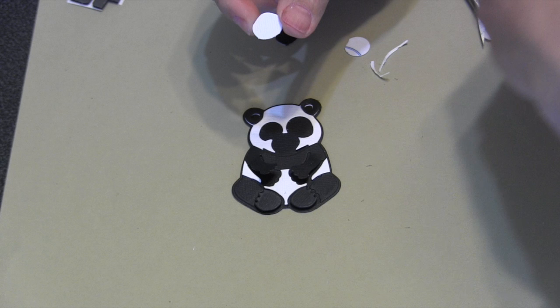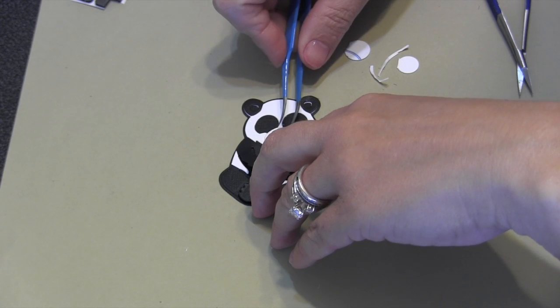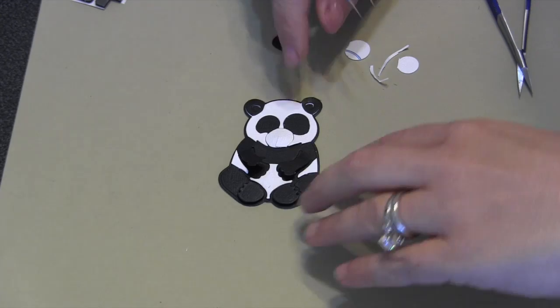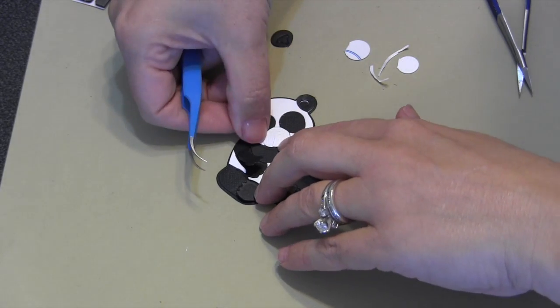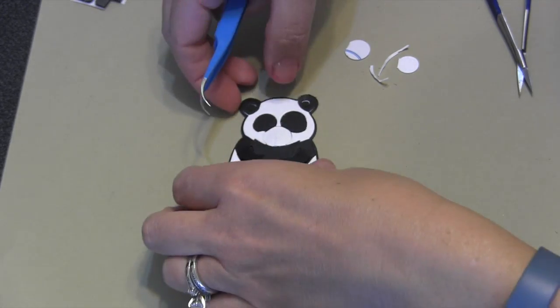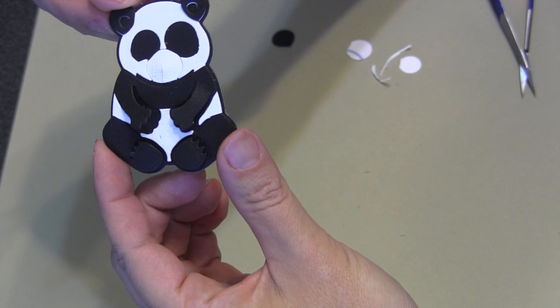You have some choices with that piece. You could just glue it down flat, or you could put it on a pop dot, or you could get a little clever like I did, which is to cut a slit from the bottom and then overlap a little bit so it gives it dimension.